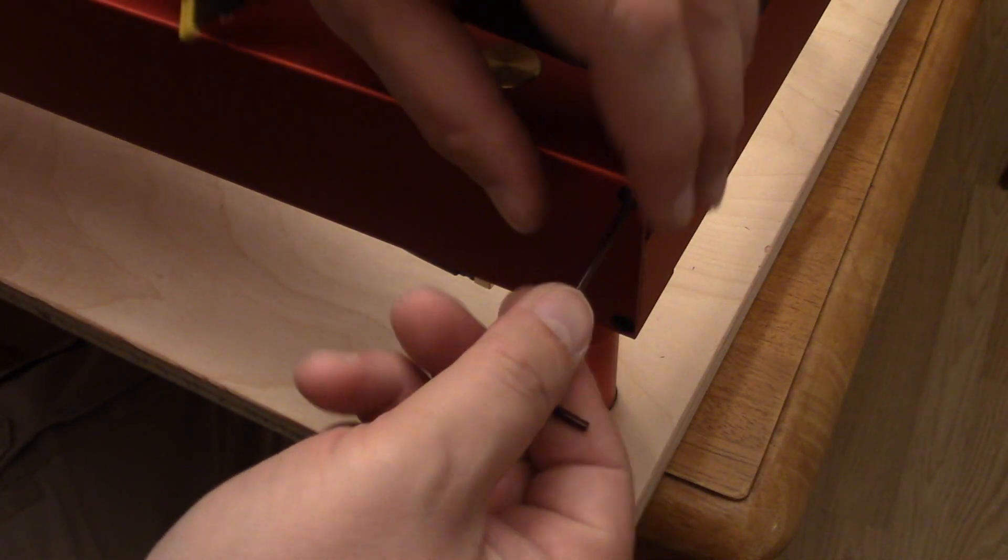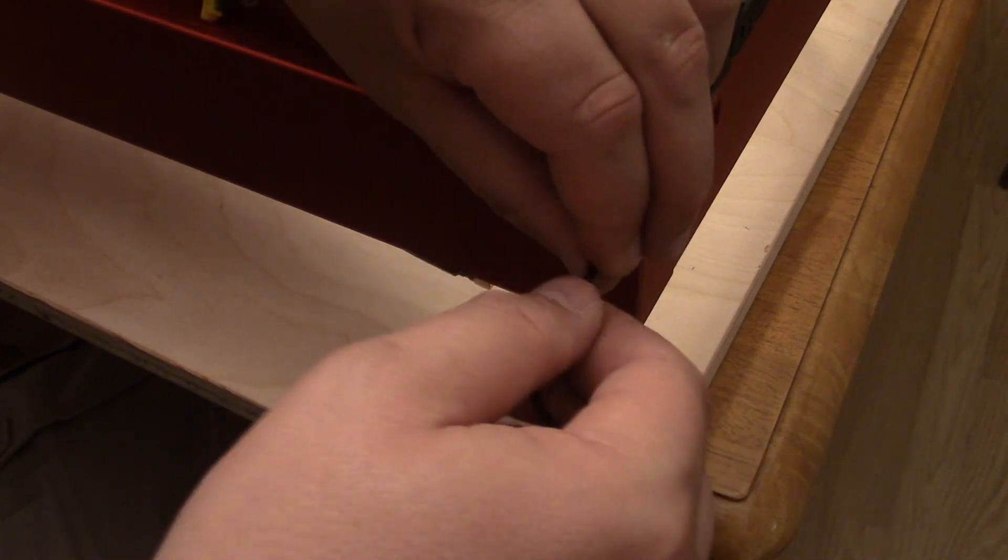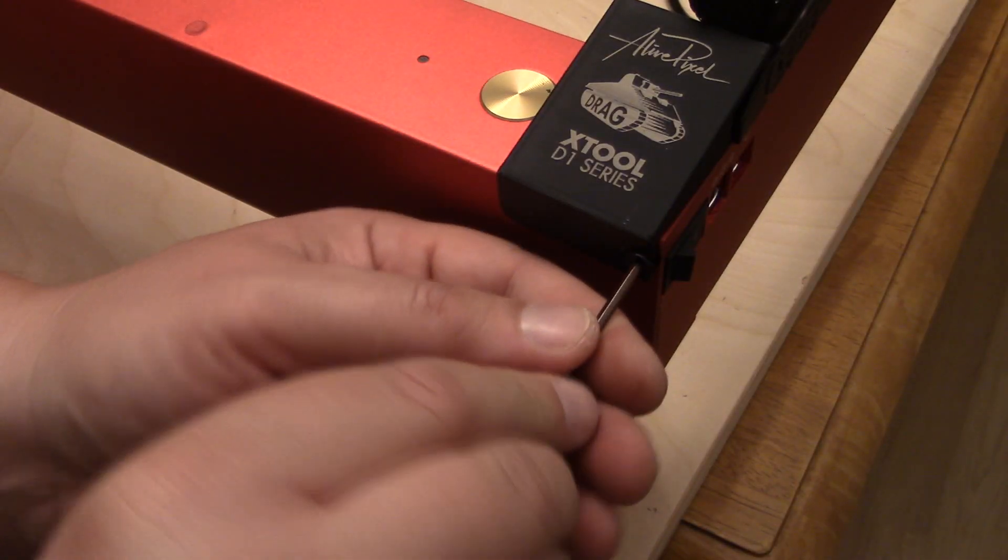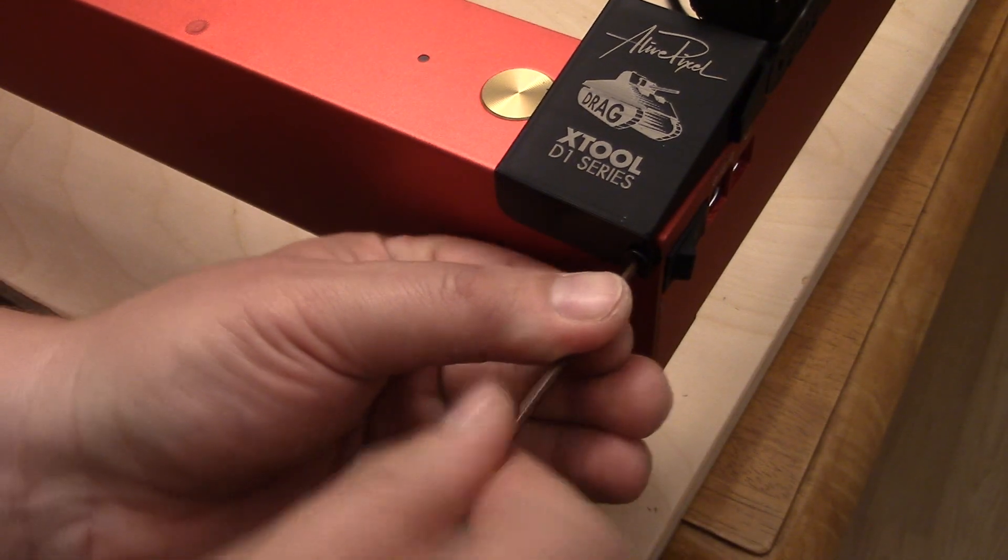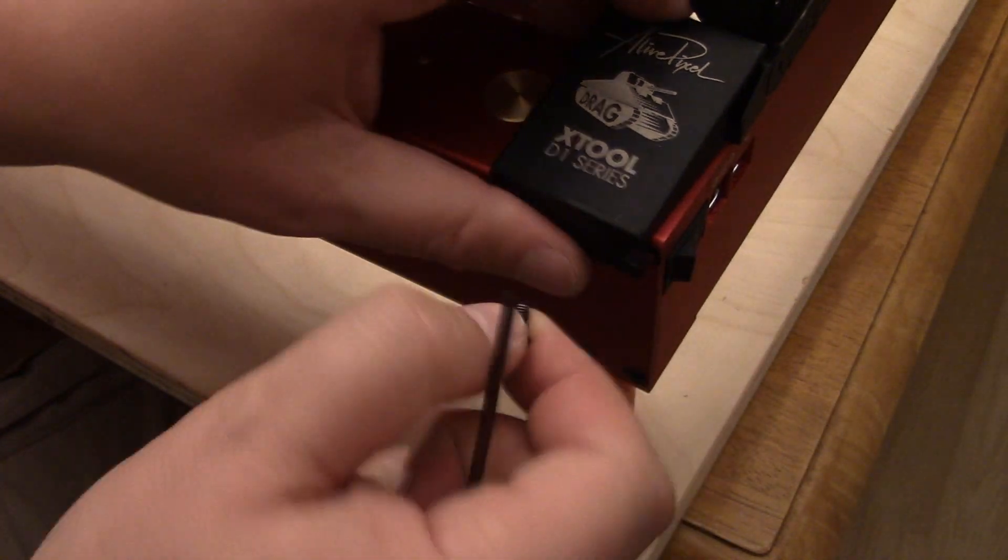You are supposed to remove the screw from the front of the frame and use it to secure a cover over the end of the drag chain. However, the frame screw was not long enough to get a good grip into the frame after installing the cover, so I just left this piece off.